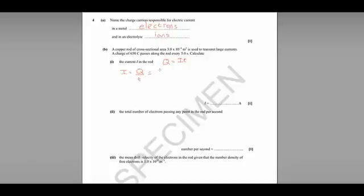We know the charge is 650 Coulombs. The time during which that charge passes is five seconds, which gives us an answer of 130 amps.